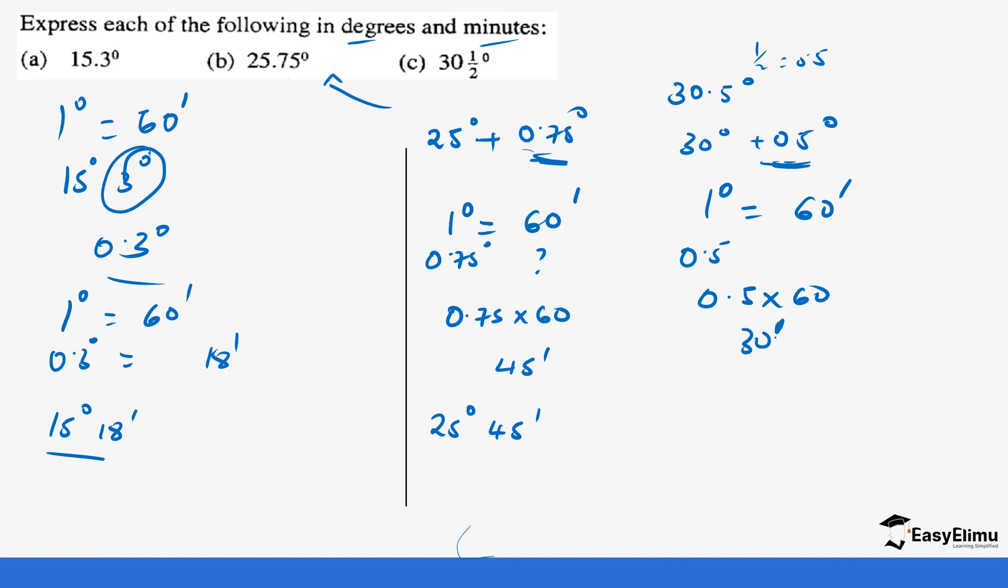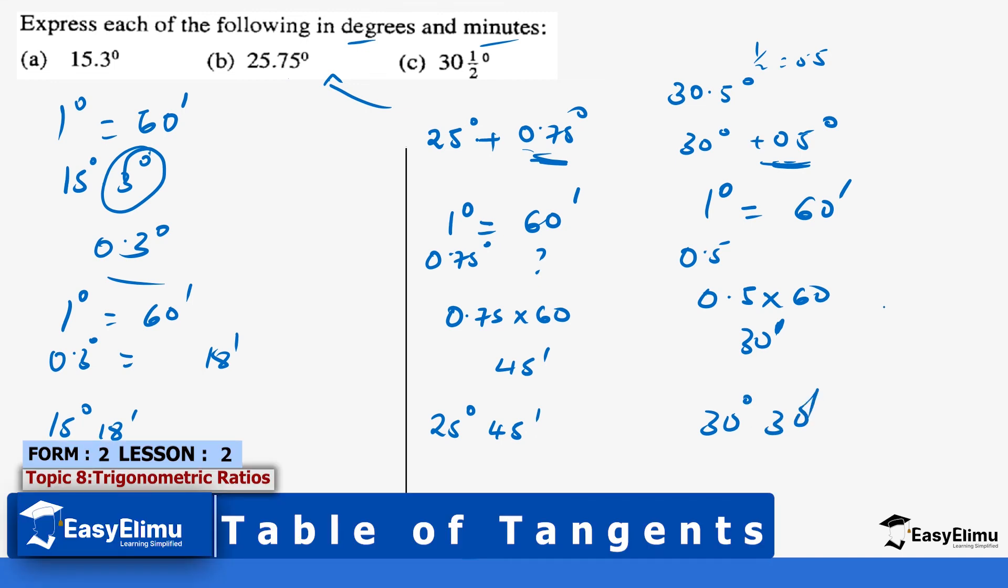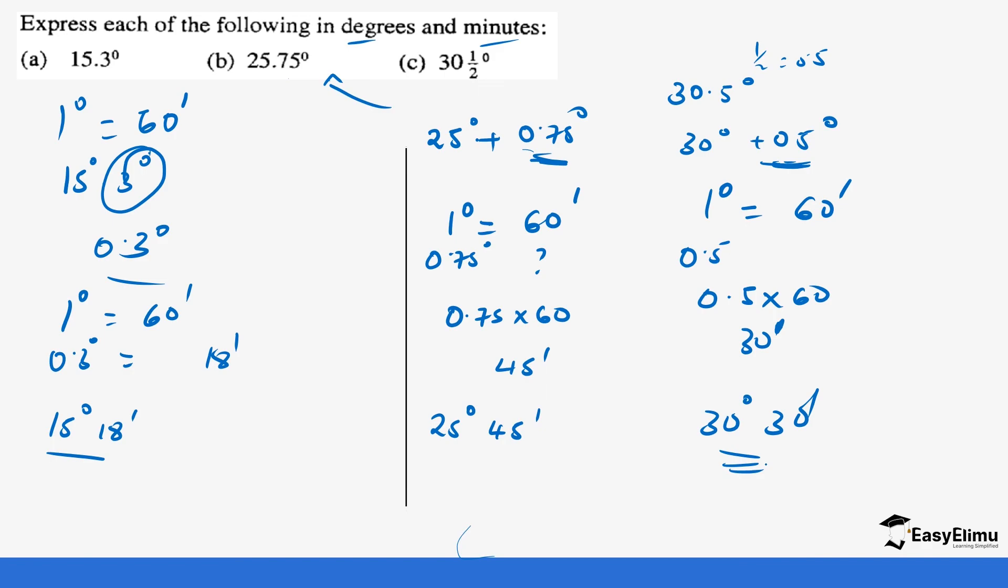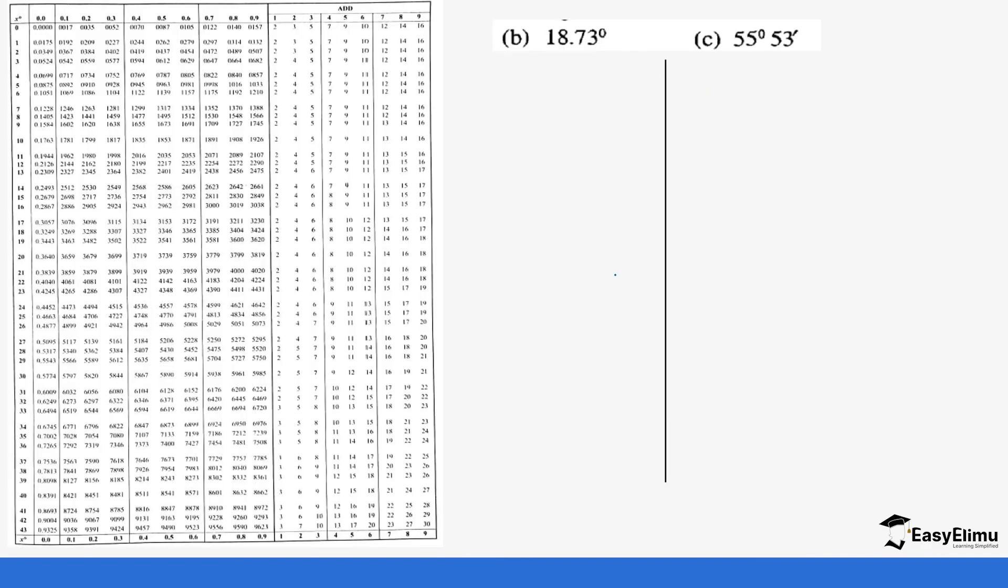That tells you that this is 30 degrees 30 minutes. And the opposite is true, you can be given this and you're told to convert into degrees. Either way you can do so. The next final question is now how can we be able to read this from our tangent table. The first question is already been converted into degrees, so our work is to read that directly from the table.